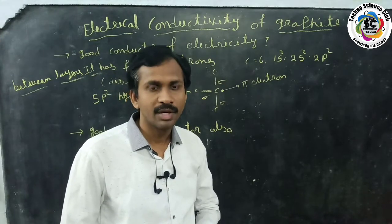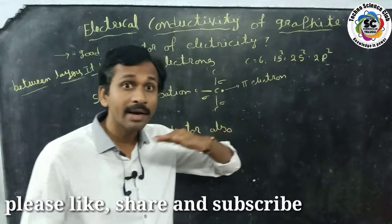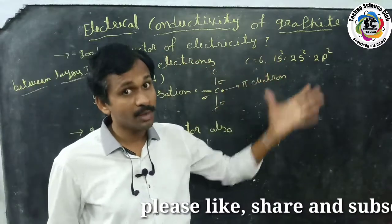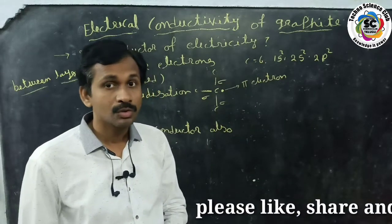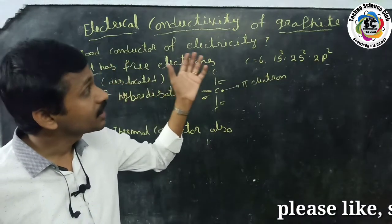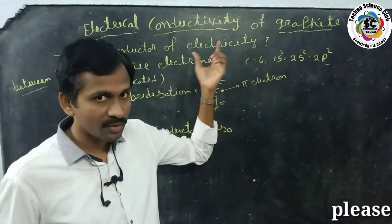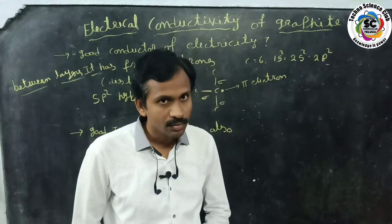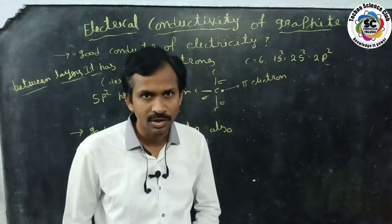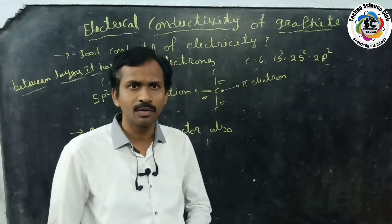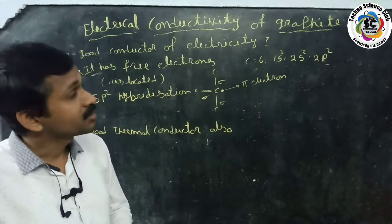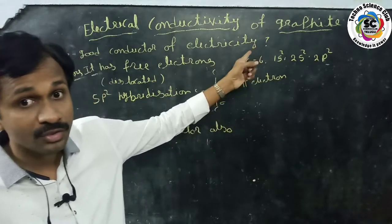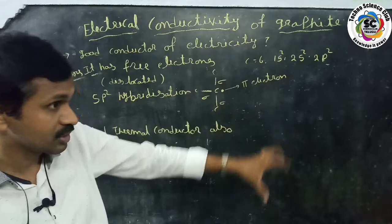Graphite is a soft material. It has a layer-like structure and graphite is an allotropic form of carbon. Carbon is a non-metal, so graphite is also a non-metal. Generally, non-metals are poor conductors of electricity, but in this special case, graphite is a good conductor of electricity.